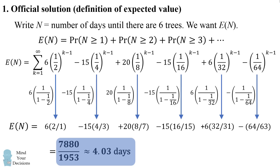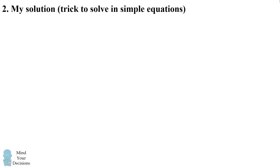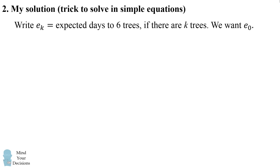So it takes about four days for all six seeds to become trees — that's the official solution. I thought about the problem differently, using recurrence relations. Let e_k be the expected number of days to get six trees if there are already k trees. What we want to solve is e_0.